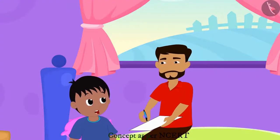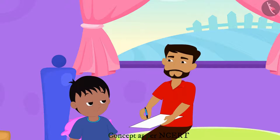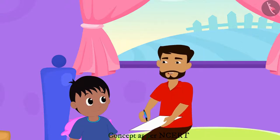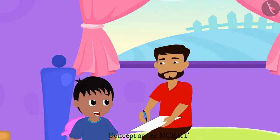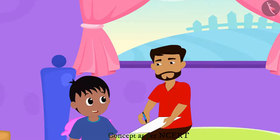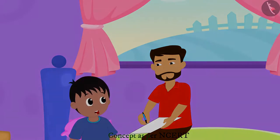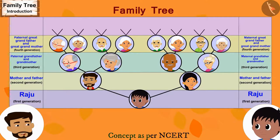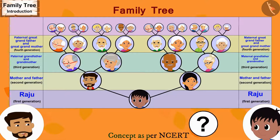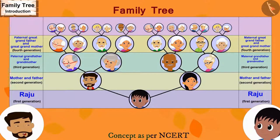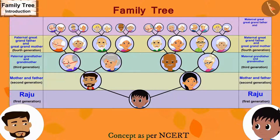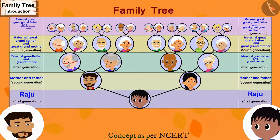Oh, wow! Now we have added all the people to this family tree. Right, father? No, Raju. There is yet another generation to be added. My maternal grandfather's grandparents and grandmother's grandparents, and paternal grandfather's grandparents' and grandmother's grandparents' names have to be added. Now Raju is thoroughly confused. Let me quickly add them to our family tree. What shall I call them, father? These are your maternal great-great-grandfather and great-great-grandmother. And these are your paternal great-great-grandfather and great-great-grandmother.